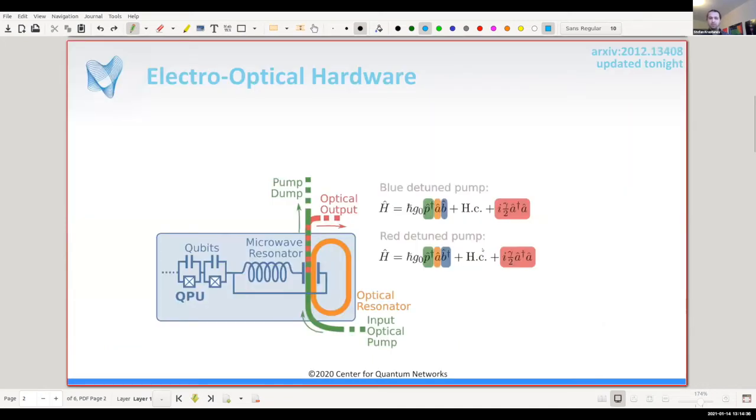So to set the stage, usually that transduction approach, the more standard approach, is you have some electro-optical hardware that lets you couple microwave and optical regime. The hardware usually will be some superconducting quantum computer, and we have some networking hardware at the edge of that quantum computer.